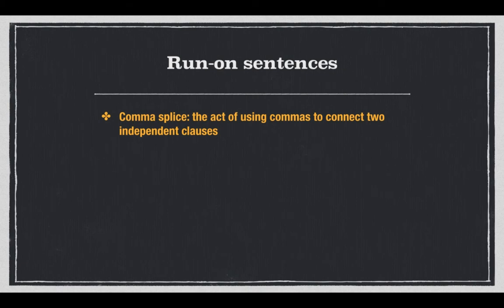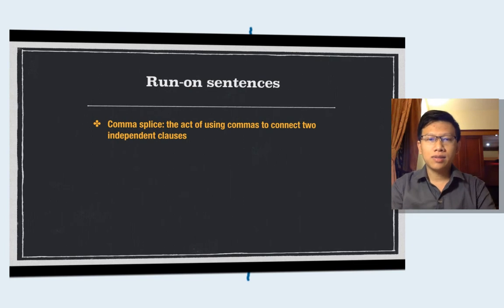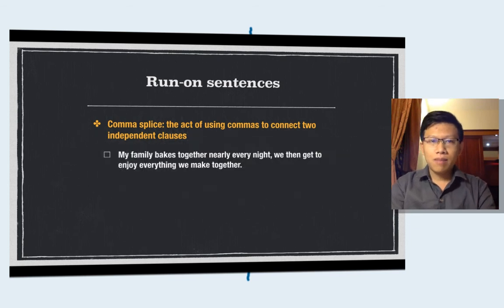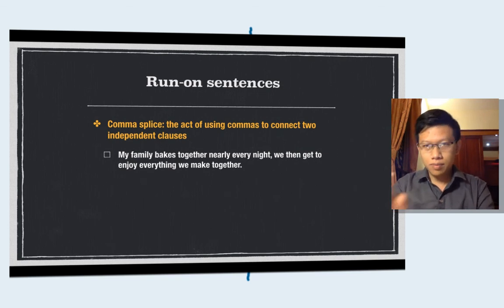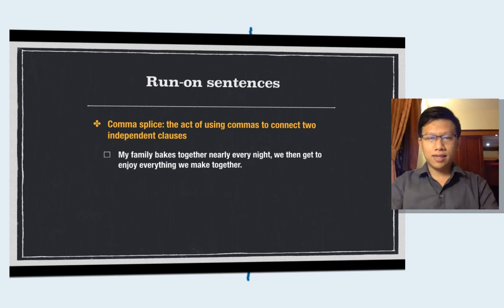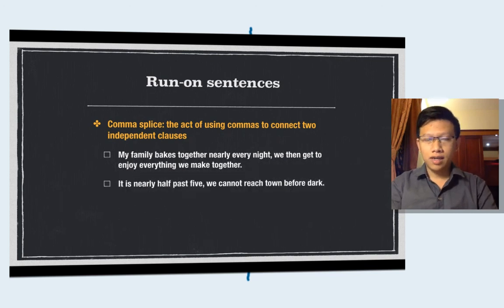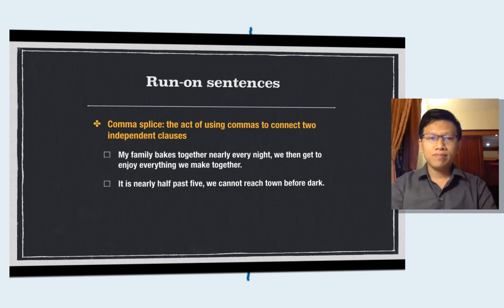One more thing I'd like you to pay attention to is the comma splice. The comma splice is mostly associated with run-on sentences. The comma splice is the act of using a comma to connect two independent clauses, as we've seen in the previous examples. For instance: 'My family bakes together nearly every night, we then get to enjoy everything we make together.' The comma here is used to connect two independent clauses, making it a run-on. Removing the comma solves the problem. Number two: 'It's nearly half past five, we cannot reach the town before dark.' We can add a conjunction like 'so,' or just remove the comma and put in a full stop.